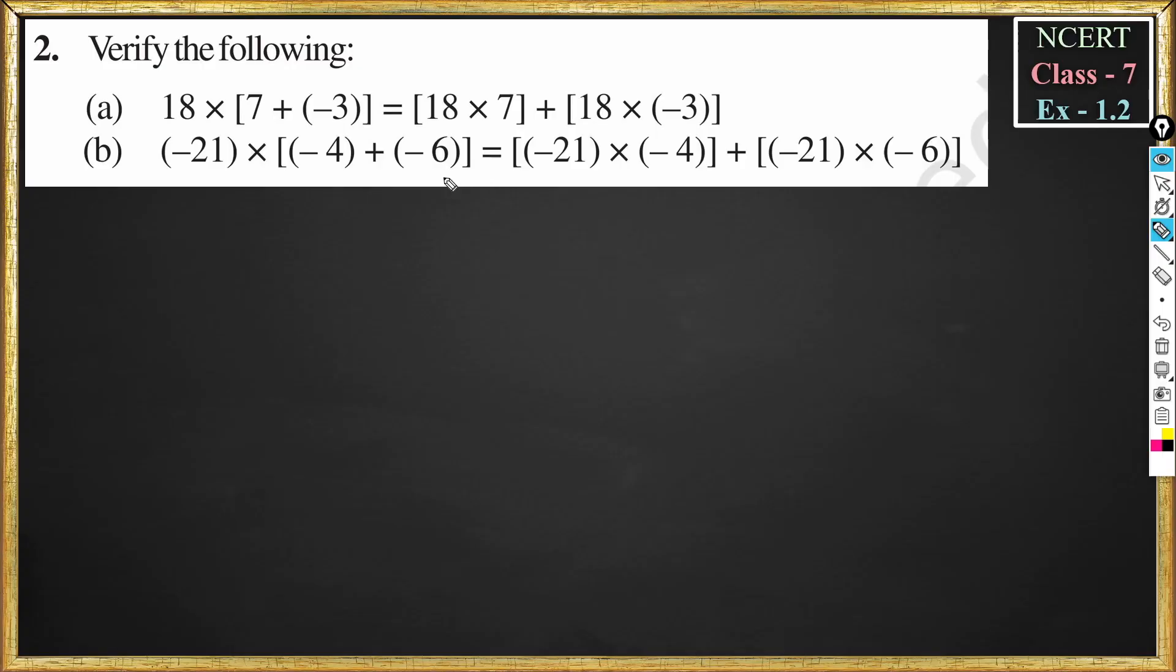Question number 2. Verify the following. Question number A: 18 into 7 plus minus 3 is equal to 18 into 7 plus 18 into minus 3.